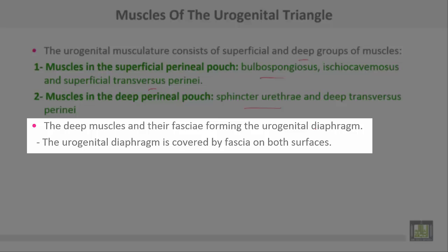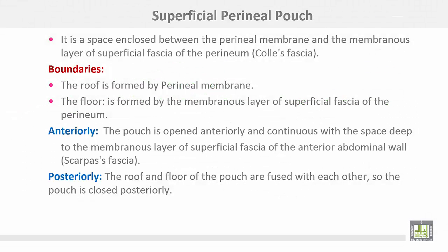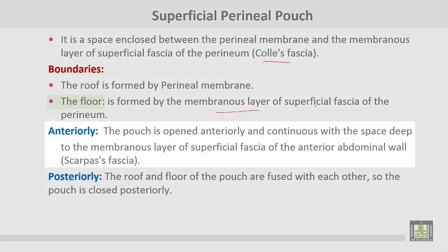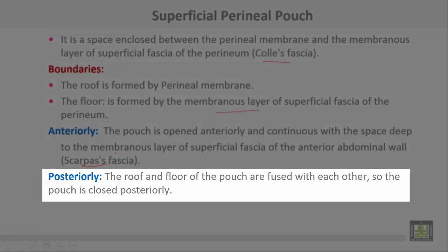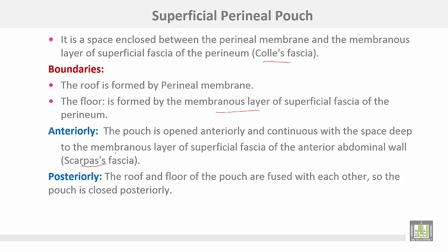The superficial perineal pouch is a space enclosed between the perineal membrane and the membranous layer of the superficial fascia of the perineum, or Colles' fascia. Its roof is formed by the perineal membrane, and its floor is formed by the membranous layer of the superficial fascia of the perineum. Anteriorly, the pouch is open and continuous with the space deep to the membranous layer of the superficial fascia of the anterior abdominal wall, or Scarpa's fascia. Posteriorly, the roof and floor are fused, so the pouch is closed.